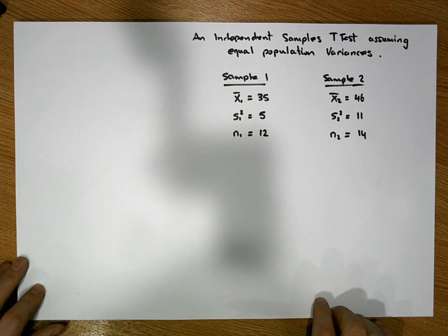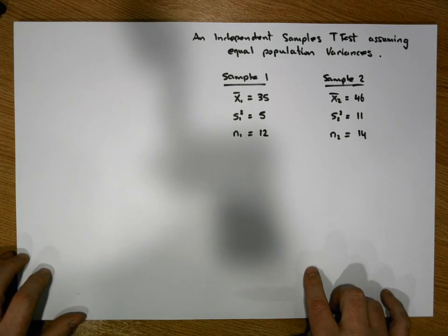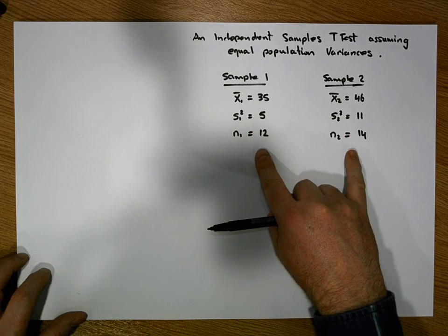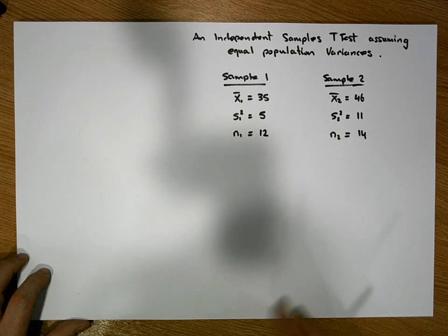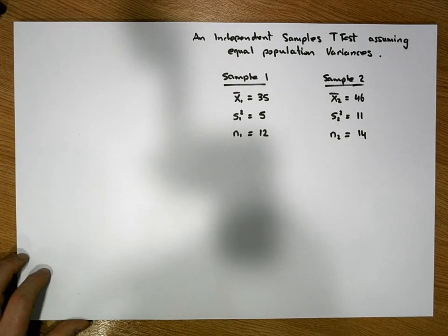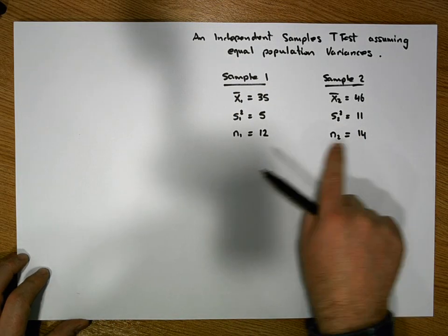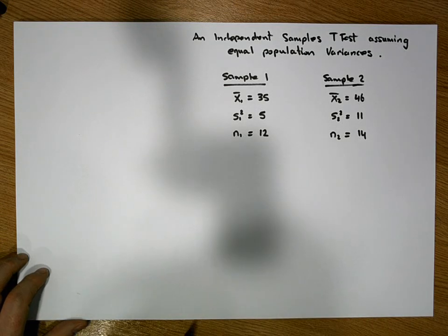In this case, we're assuming equal population variances. In a previous video, I ran the f-test for this particular scenario, and the f-test told us there was insufficient evidence to reject the null position in favour of the alternative. So we are proceeding under the assumption of equal population variances. Just keep in mind that our sample sizes are relatively small here — I'm keeping the numbers small just for the hand calculation.